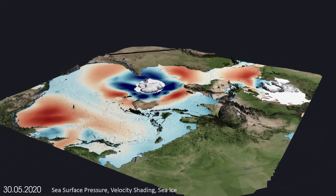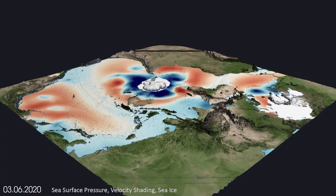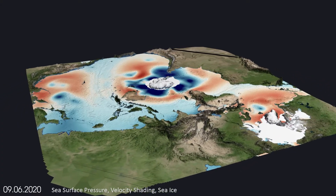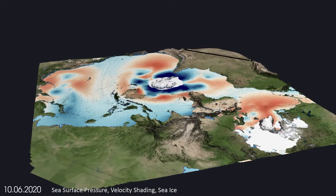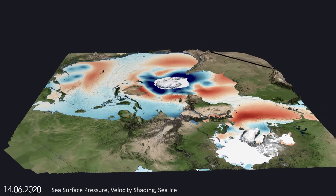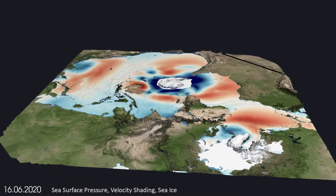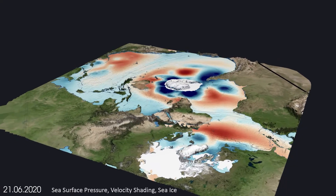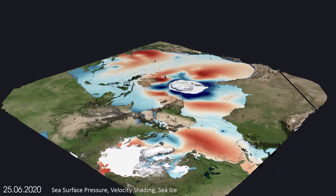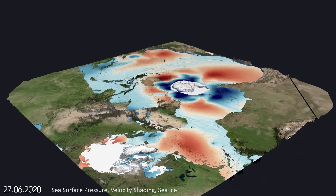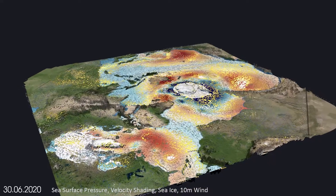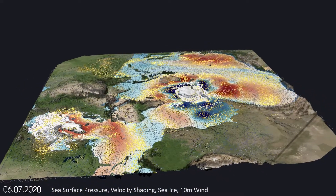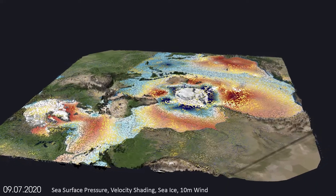The majority of inhabited places are situated near the coast, where the local weather is often strongly influenced by the sea. Here we visualize areas of low air pressure in blue and high air pressure in red. By showing the 10-meter wind at the same time, the interaction between low and high pressure systems can nicely be seen.